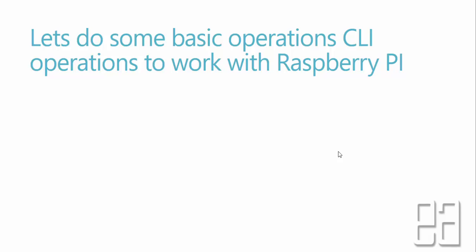So let's do some of the basic CLI operations to work with our Raspberry Pi. CLI is nothing but command line interface operations. We are going to use some of the basic command line interface to make sure that we work with Raspberry Pi without any problem. Since we are going to use Raspberry Pi to deploy our WordPress website, we need to know some of the basic commands of Linux.